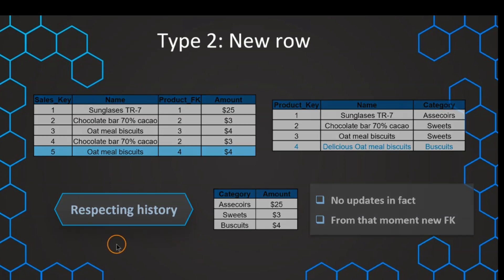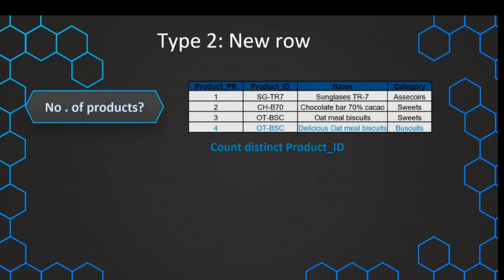With that, we get the correct results and we completely and perfectly respect the history in our data. This is what we usually want to have if we are expecting common changes in our dimension values. One question that might arise is: what can we do to calculate the number of products? Because now in our dimension table there are different rows for the same product. But keep in mind that we still have the natural key — in this case, the product ID — so we can just count the distinct values of the product ID, and with that we still get the correct number of products.